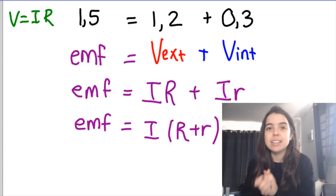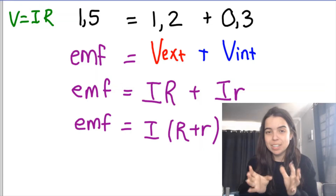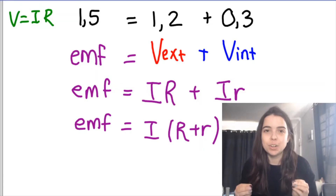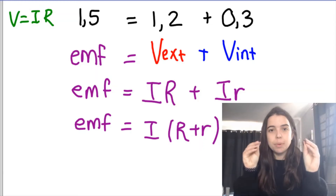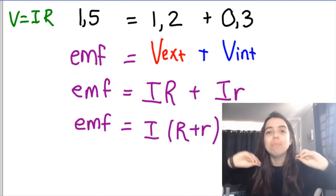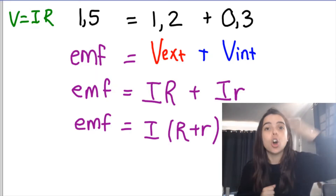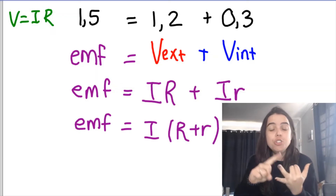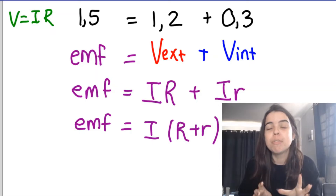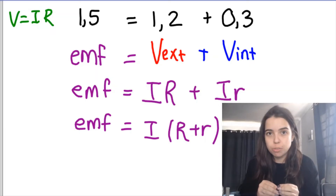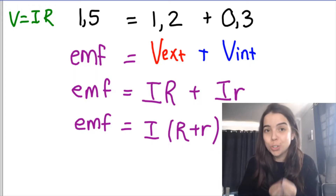On the screen, you can see that my EMF formula says the following: EMF is equal to V external plus V internal. What that means is — if I attach the terminals of a battery to a voltmeter, so attach a voltmeter across the terminals of the battery, and my switch is open with no current flowing, that voltmeter will read the EMF. That's maximum energy provided per unit charge, or per coulomb, by the battery.